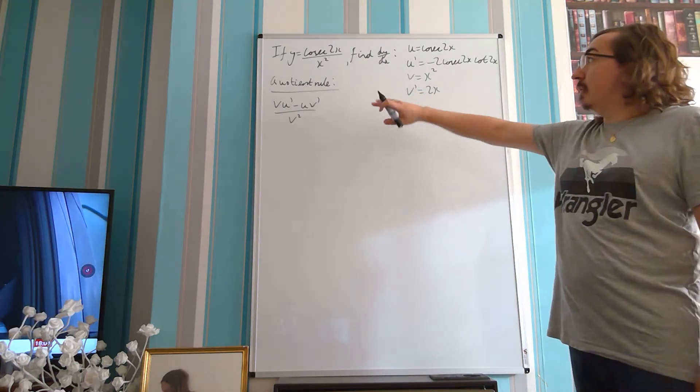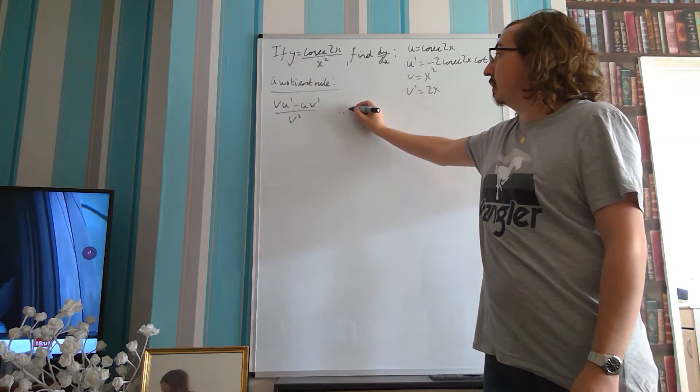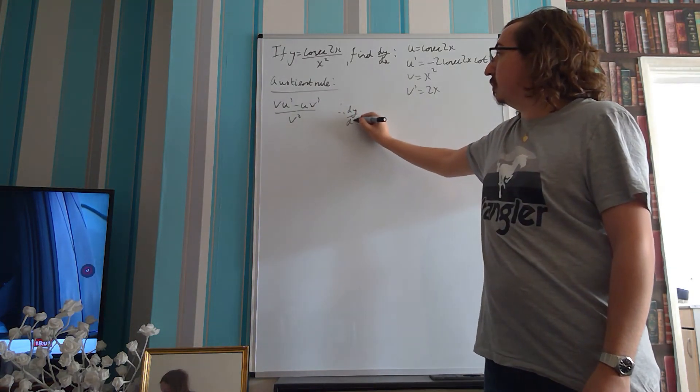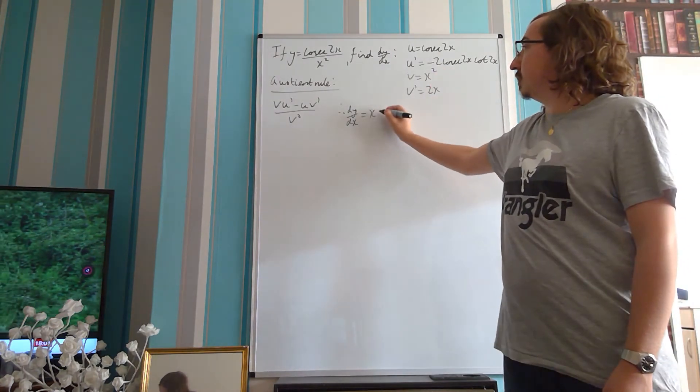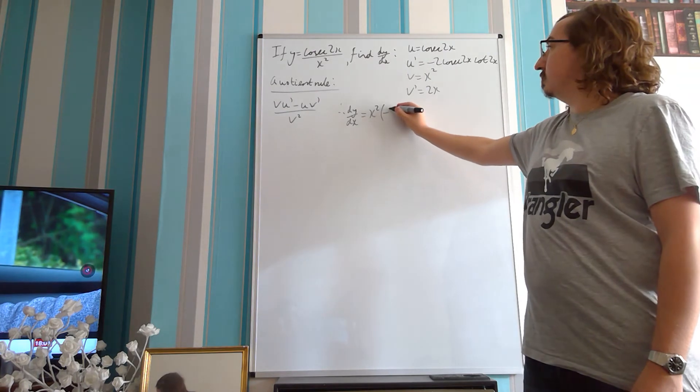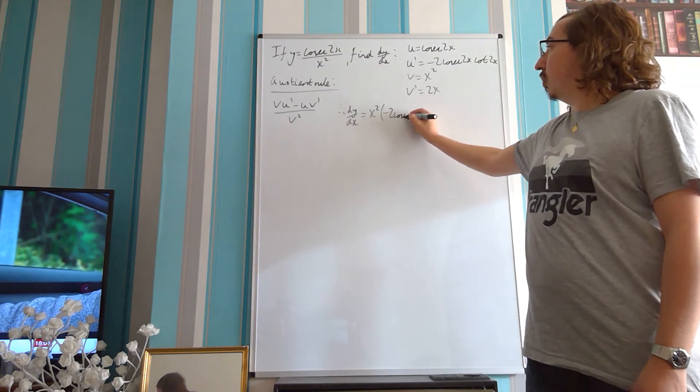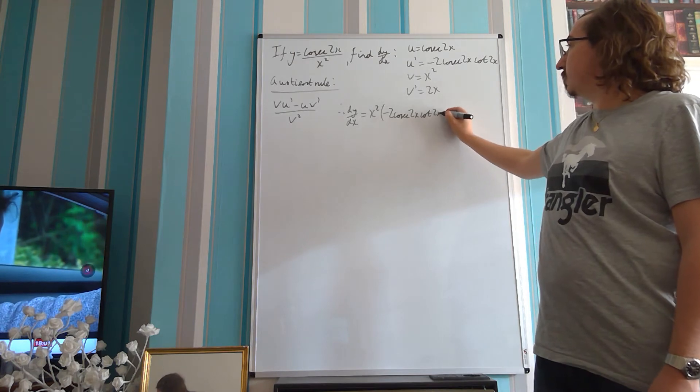So, we've now got all of our parts, all we need to do is substitute them. Therefore, I can say dy by dx is equal to our v, which is x squared, times our u dashed, which is minus 2 cosec 2x cot 2x,